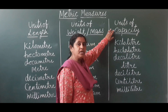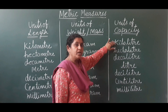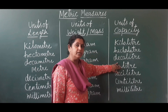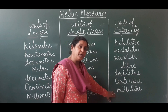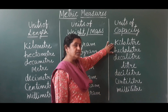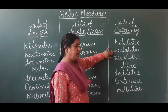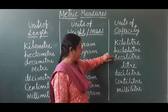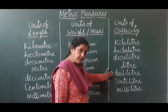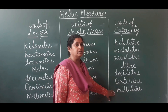Units of capacity: the biggest unit is kiloliter, the basic unit is liter, and the smallest unit is milliliter. In order from biggest to smallest: kiloliter, hectoliter, decaliter, liter, deciliter, centiliter, and milliliter.